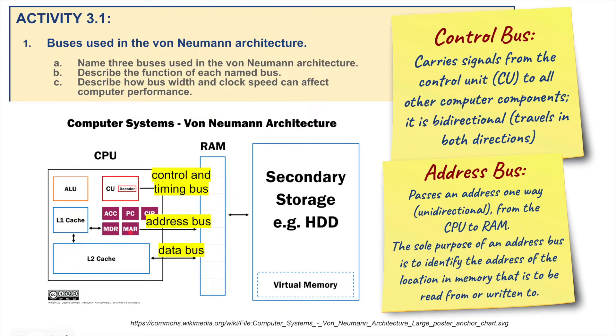Address Bus passes an address one way. It's unidirectional from the CPU to the RAM. The sole purpose of an Address Bus, it identifies the address of the location in memory that is to be read from or written to. So it's identifying where something lives or where it needs to live.